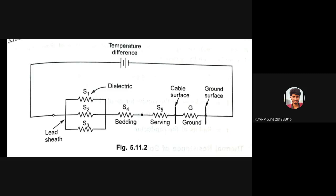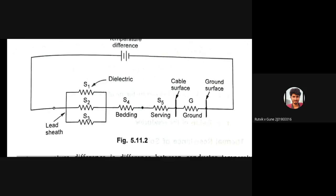The current carrying capacity of cables depends on heat dissipation. To calculate it, we must obtain the thermal resistances of various parts through which heat flows. The entire heat flow analysis is governed by the main parameter S, which is thermal resistance.